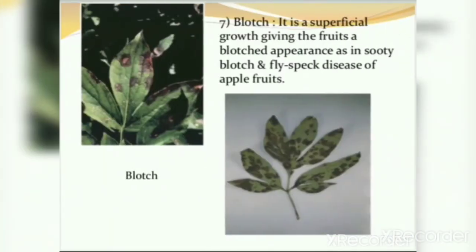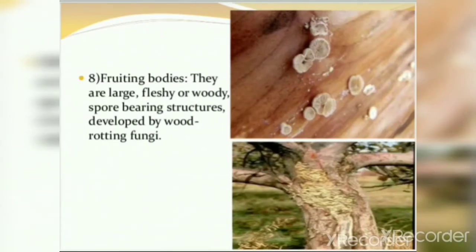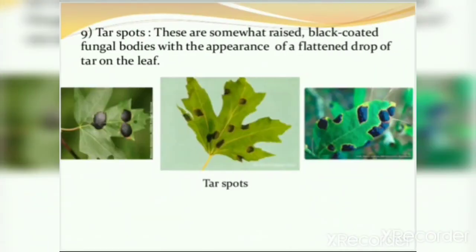Seventh is blotch — a superficial growth giving the fruit a blotched appearance, as in sooty blotch and flyspeck disease of apple fruit. Eighth is fruiting bodies — large, fleshy and woody spore-bearing structures developed by wood-rotting fungi, usually visible under wet or rainy conditions. Ninth is tar spot — somewhat raised, black-coated fungal bodies with the appearance of a flattened drop of tar on the leaf, seen in lady finger or okra.